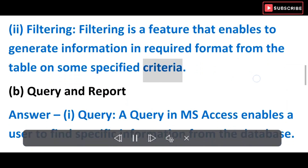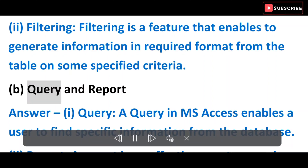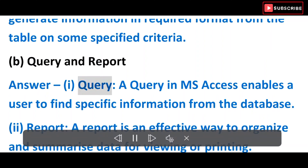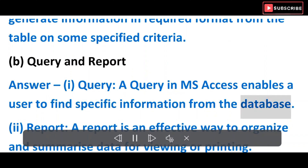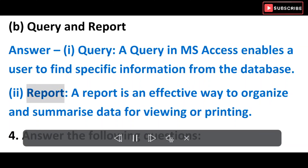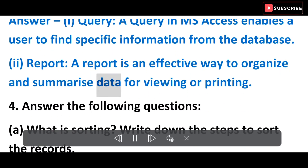B) Query and Report. Answer: i) Query — a query in MS Access enables a user to find specific information from the database. ii) Report — a report is an effective way to organize and summarize data for viewing or printing.